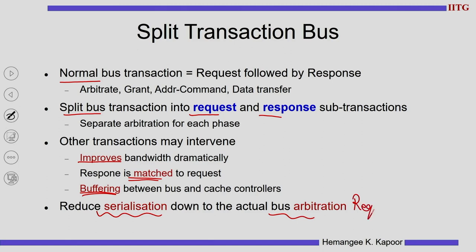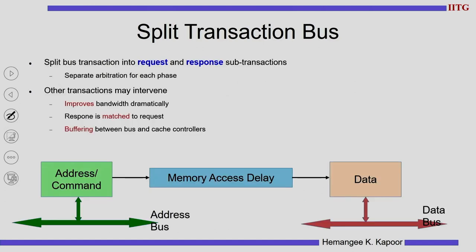In the request transaction, whenever we win the bus arbitration, that is the serial order. Because of the split transaction bus, I need to split the bus physically as well. Initially we had a common bus on which everything happened, but now that request and response are two different phases I would need two different buses, because we have to arbitrate each phase separately — I need to ask for the bus for sending the request and for sending the response.